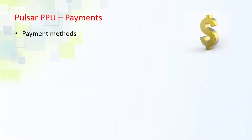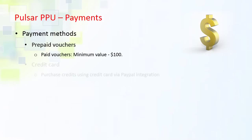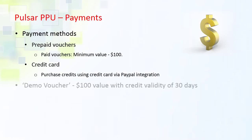You can add credit to your account in two ways: you can buy vouchers from us or through your reseller, or pay with credit card. We also provide each new user with a $100 demo voucher so you can try Pulsar at no cost to you. The credit is good for 30 days, so you have nothing to lose and a lot to gain.